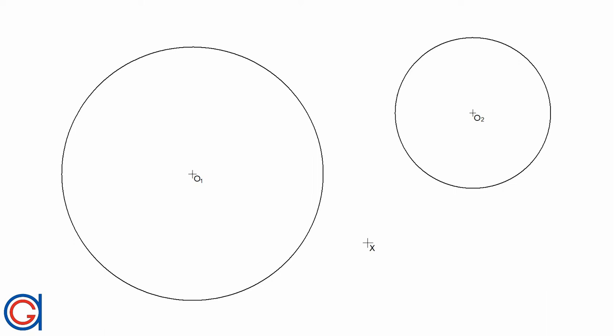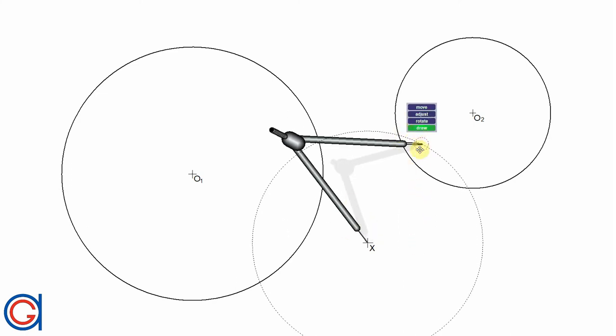To start this process, the first thing we are going to do is pick a random exterior point x, as can be seen here on the screen. Now, using this point as a center point, we are going to draw a random circle which cuts the circumferences of circle number one and circle number two at four new points.